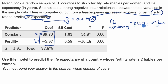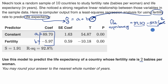Now we can use this to estimate the life expectancy of a country whose fertility rate is two babies per woman. For fertility, you just put a two in, and then you get your estimated life expectancy.